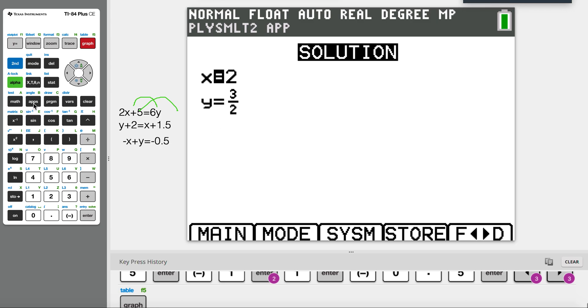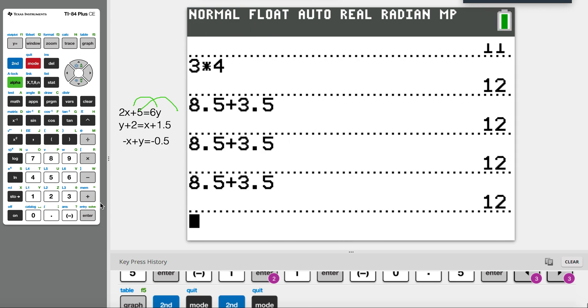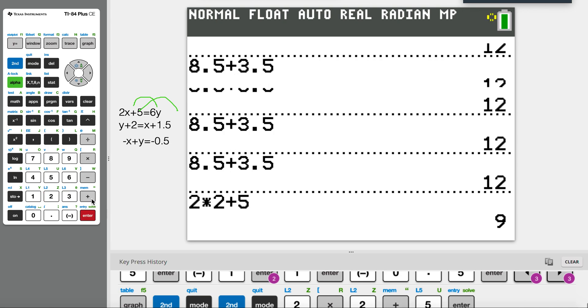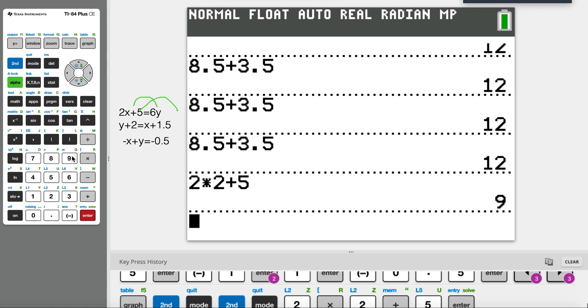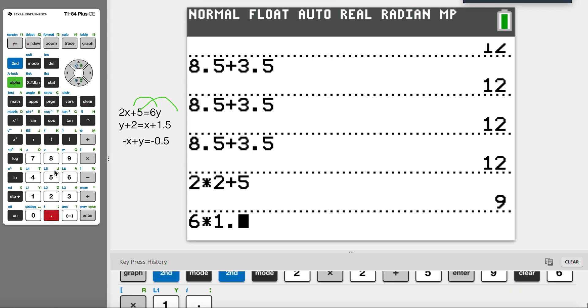So x is 2 and y is 1.5. Let's see whether it works. Okay, so now let's check whether it works. First of all, let's do 2 times—our answer is x is 2—so 2 times 2 plus 5 is 9. And y is 1.5, so 6 times 1.5 is 9. So our first equation is correct.